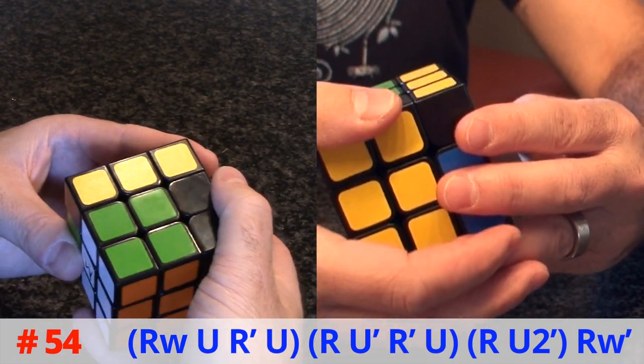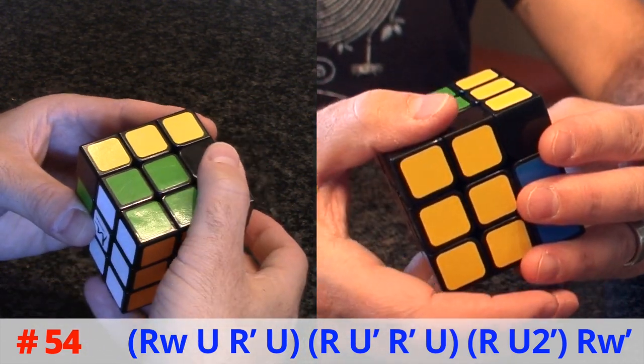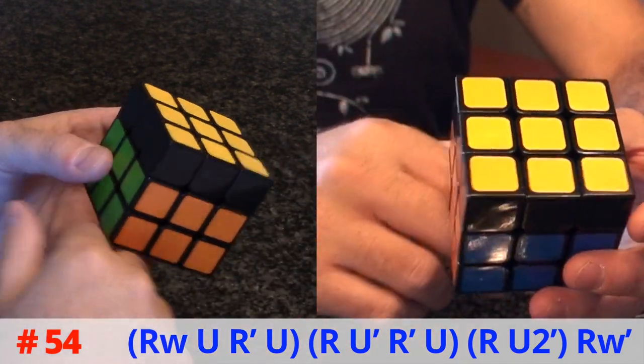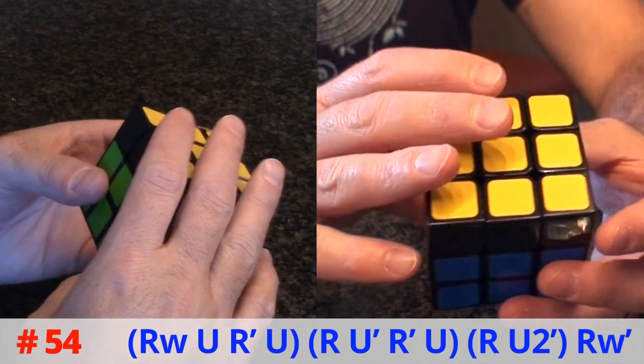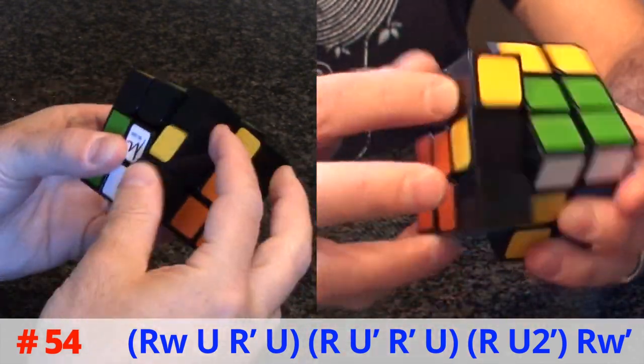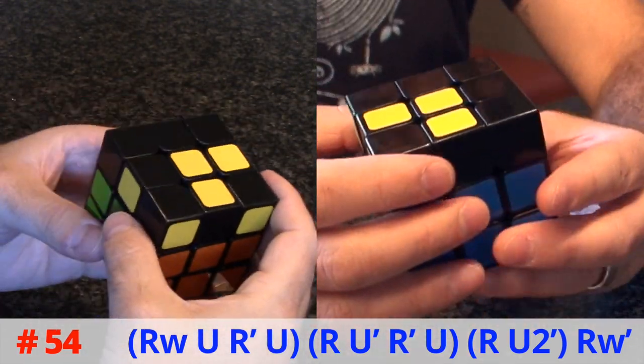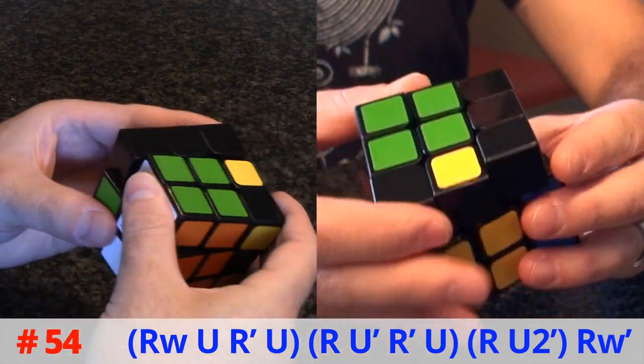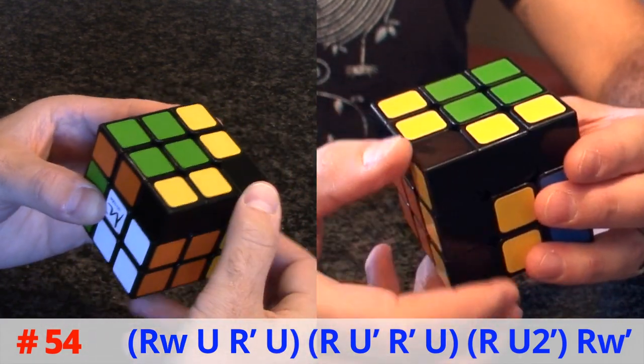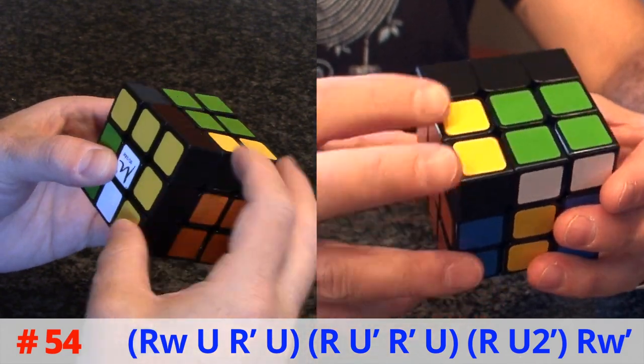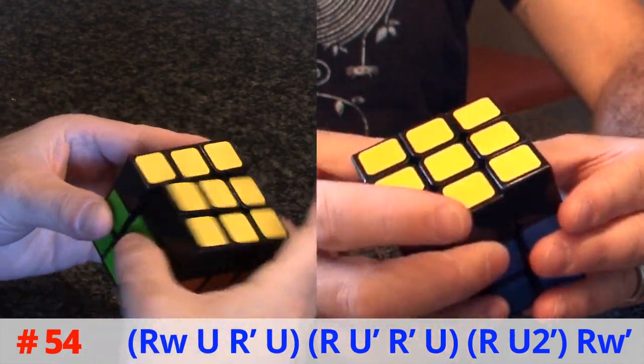And the reason I do that is because your hand ends up here as you see. And you can do a right wide prime to return it. Alright, so let's say it again. It's right wide U R prime U R U prime R prime U R U2 prime R W prime.